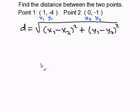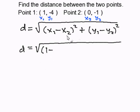Now we have that written down, we can substitute in our values. I'm going to rewrite the distance formula: x₁ is going to be 1 minus x₂, 0, squared, plus y₁ which is -4 minus y₂ which is -1, and we take the square of that.